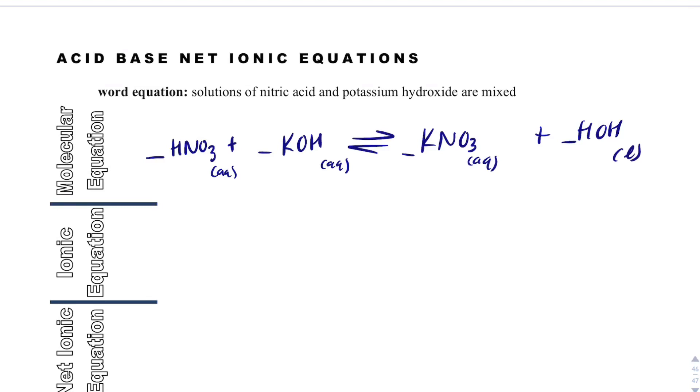And what we have going on here is we have HNO3. Nitric acid is a strong acid, so it is best represented broken apart for an ionic equation.